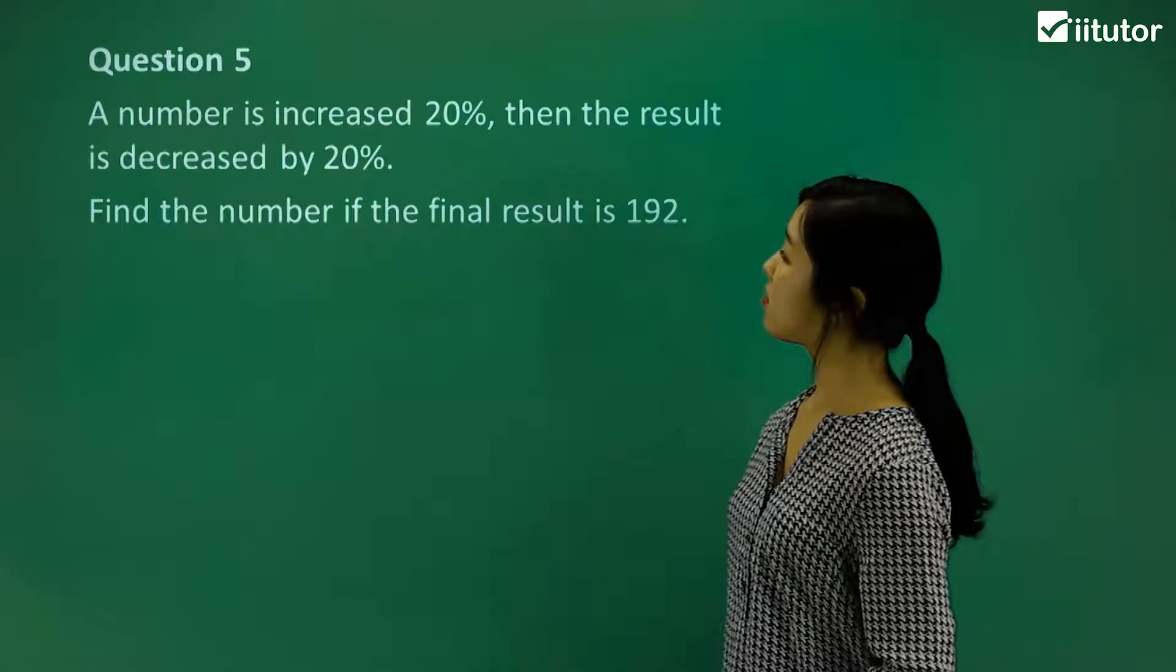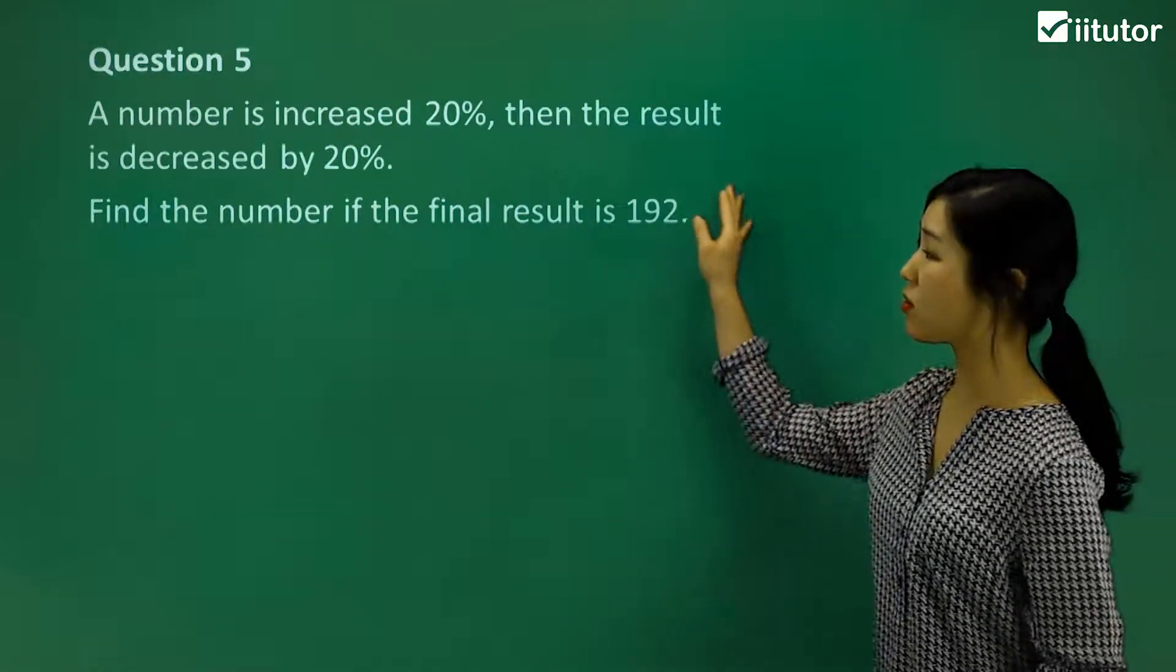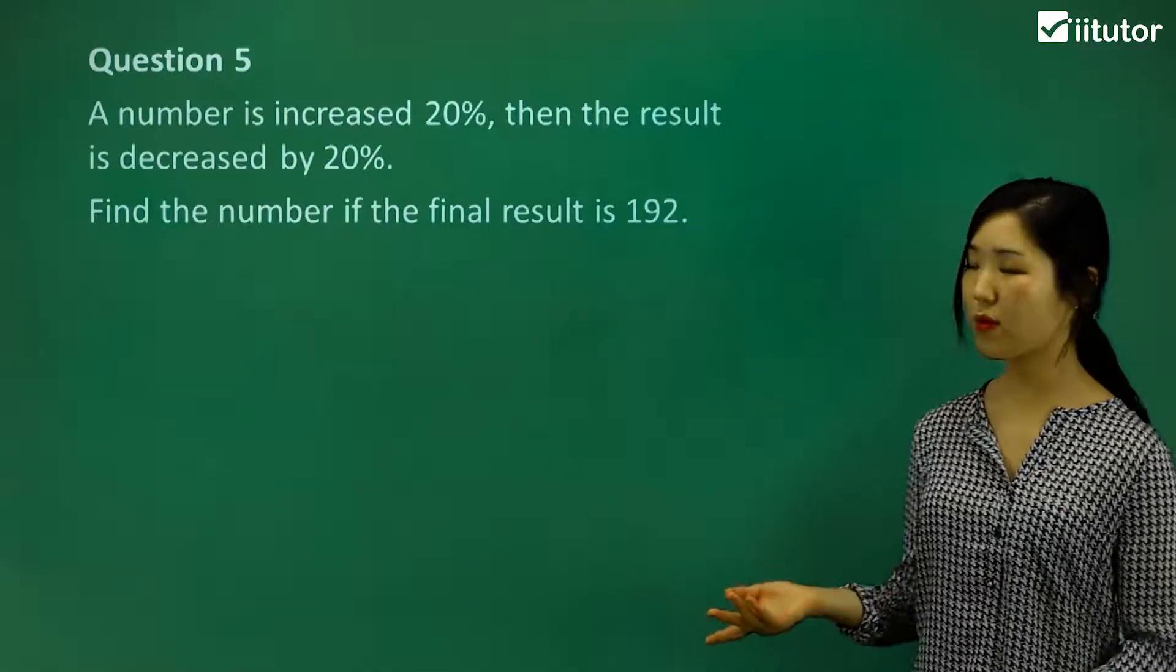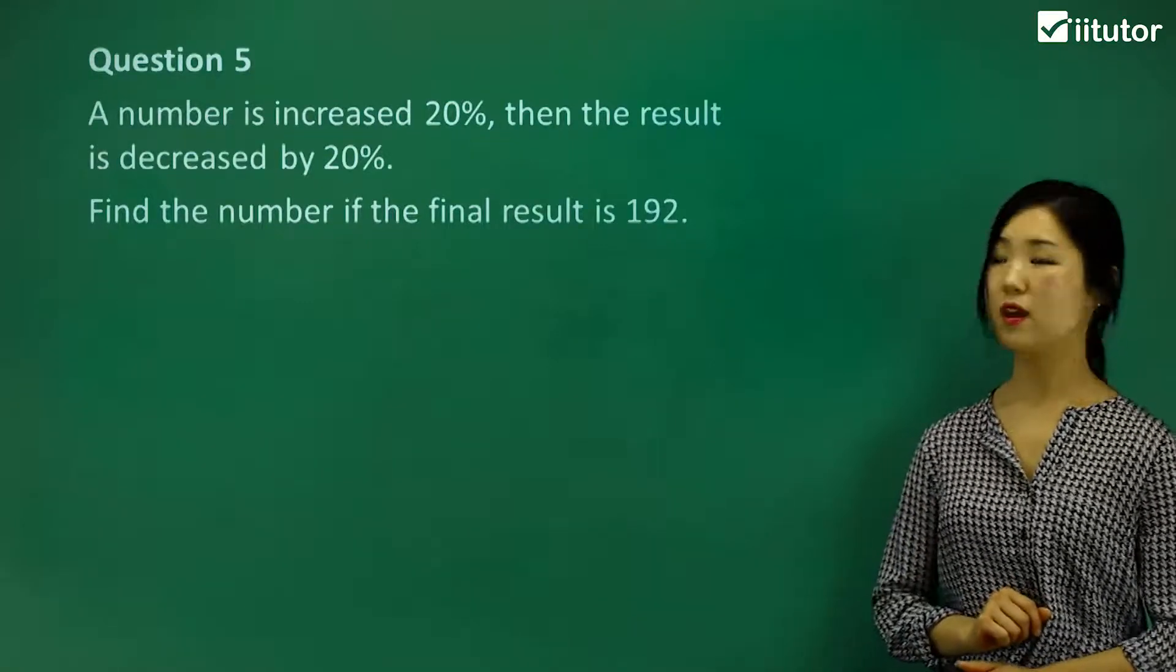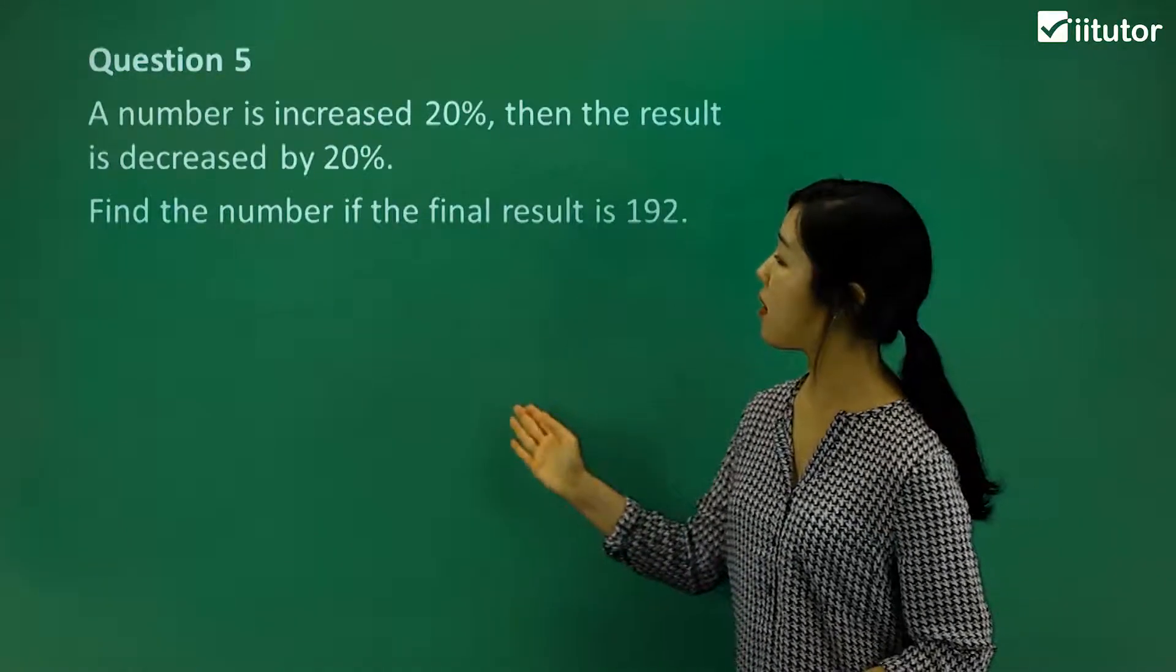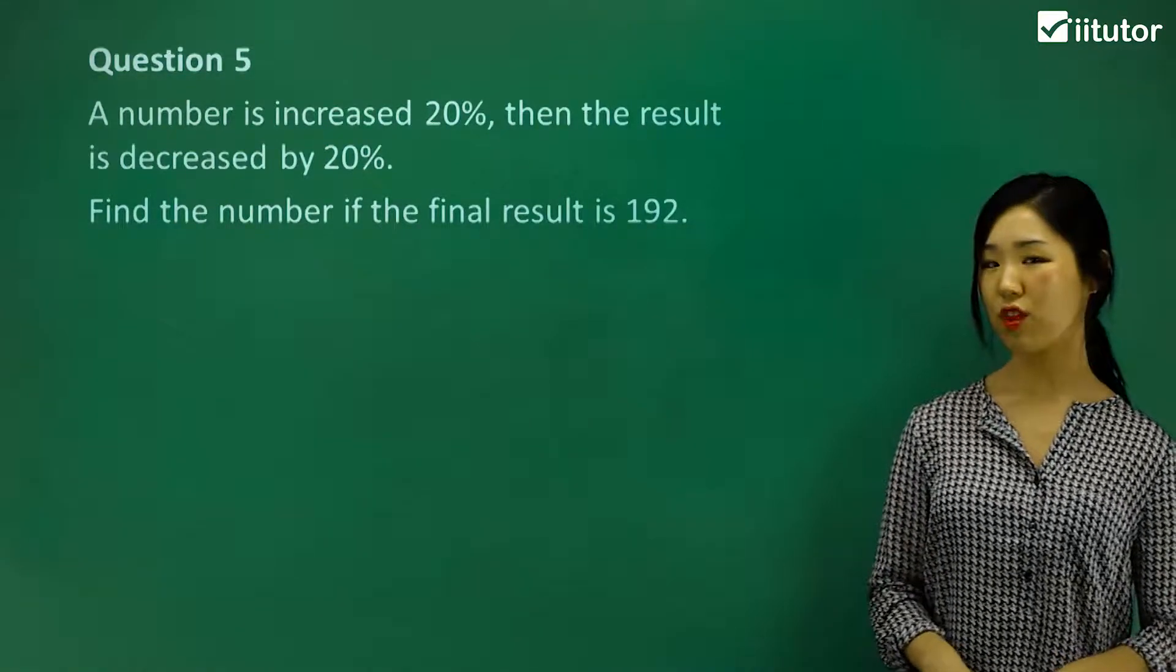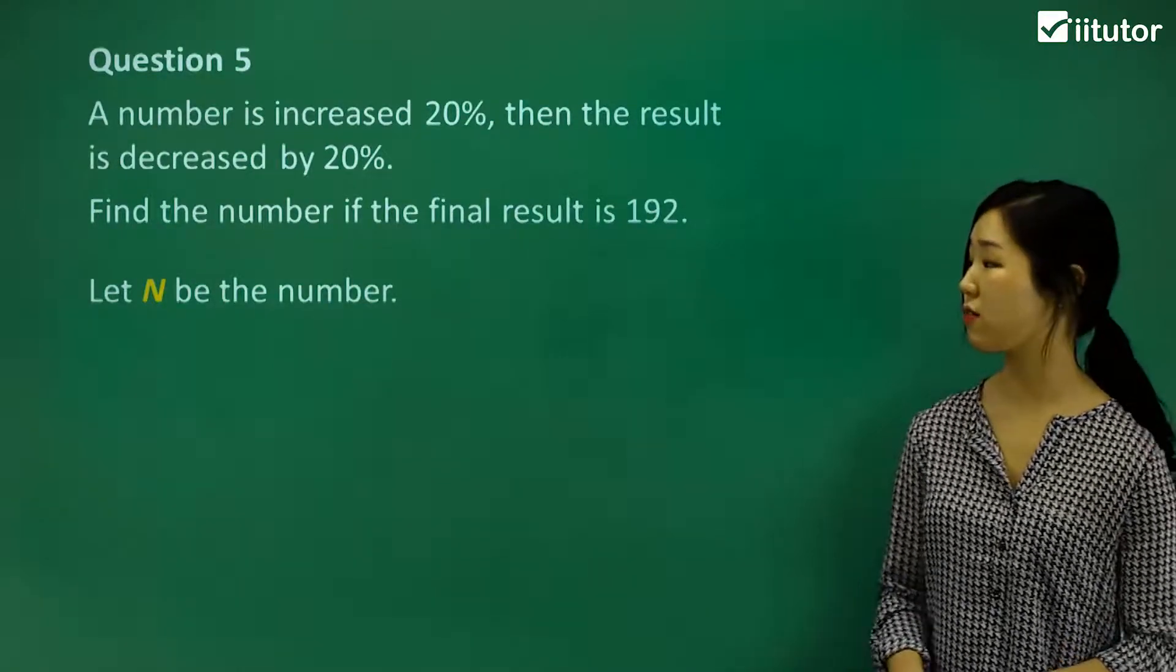Question five. A number is increased 20%. Then the result is decreased by 20%. So it's increased 20% and then it's decreased by 20%. So two things are happening. Now it says find the number if the final result is 192. Now let's use a little bit of algebra here. I'm going to let N be the number that we're looking for.